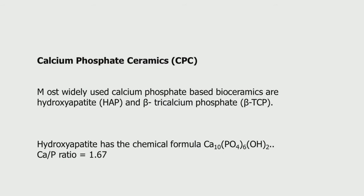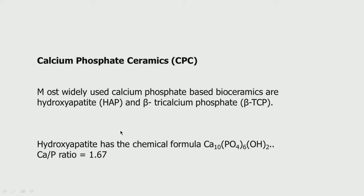Calcium phosphate ceramics (CPC) are used as bioceramics in the form of hydroxyapatite and beta-tricalcium phosphate. Hydroxyapatite has the chemical formula with calcium, phosphate, and the hydroxyl group; the calcium to phosphorus ratio is generally 1.67. Calcium phosphate and hydroxyapatite are widely used in bone filling because bone is predominantly calcium phosphate, so osteointegration happens very comfortably.